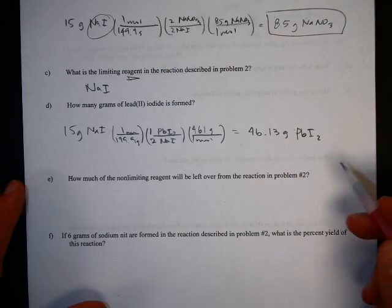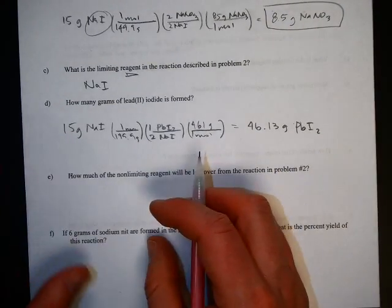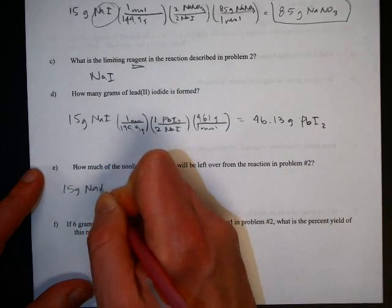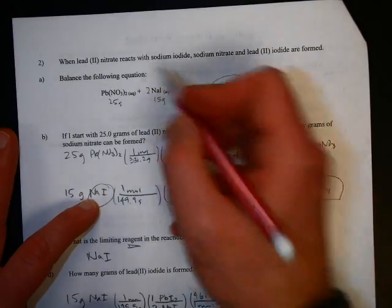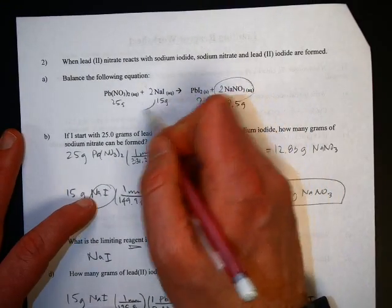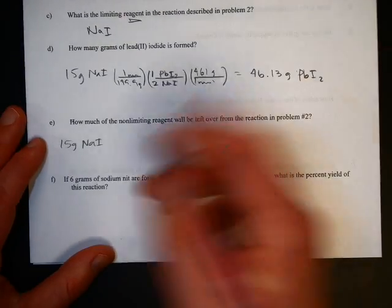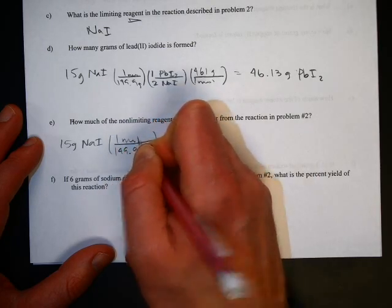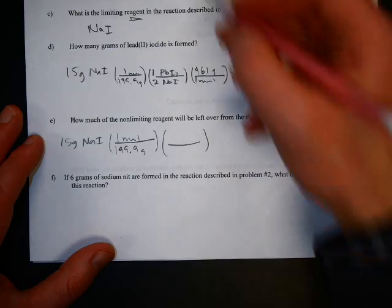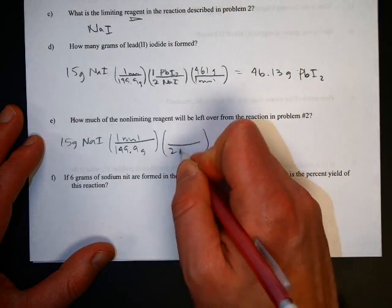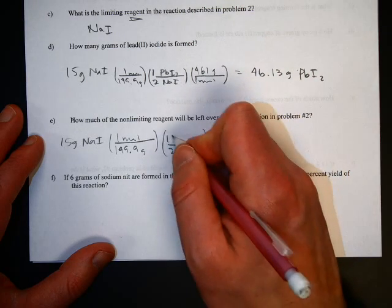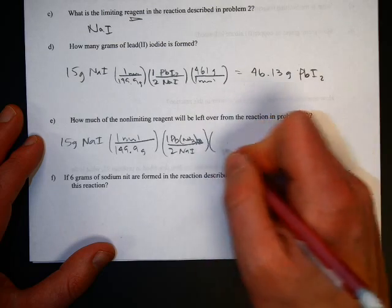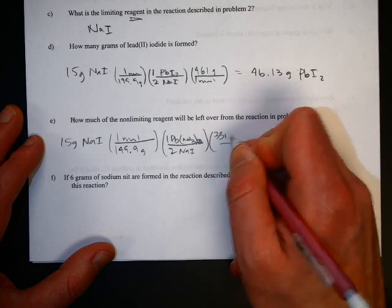How much limiting is left over? There's more than one way to do that. Mr. Peters kind of showed you one. I like doing it, I like subtracting at the end. So take your 15 grams of sodium iodide that you started with, the one that runs out first, and just convert it to the excess reactant, which is this one. And that will tell you exactly how much you used. So 15 grams of sodium iodide, we know that it's 149.9 grams per mole. The mole ratio is two NaI will react with one lead nitrate. And the molar mass of lead nitrate is 331.2 grams.